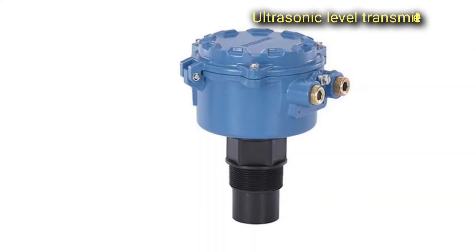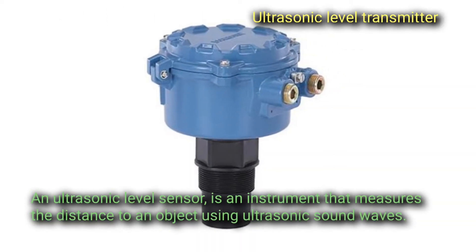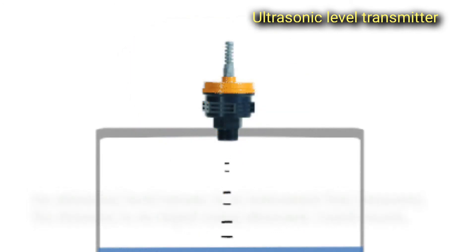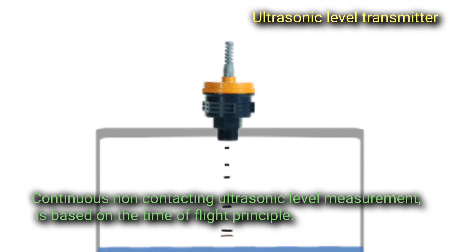Ultrasonic Level Transmitter. An ultrasonic level sensor is an instrument that measures the distance to an object using ultrasonic sound waves. Continuous non-contacting ultrasonic level measurement is based on the time of flight principle.